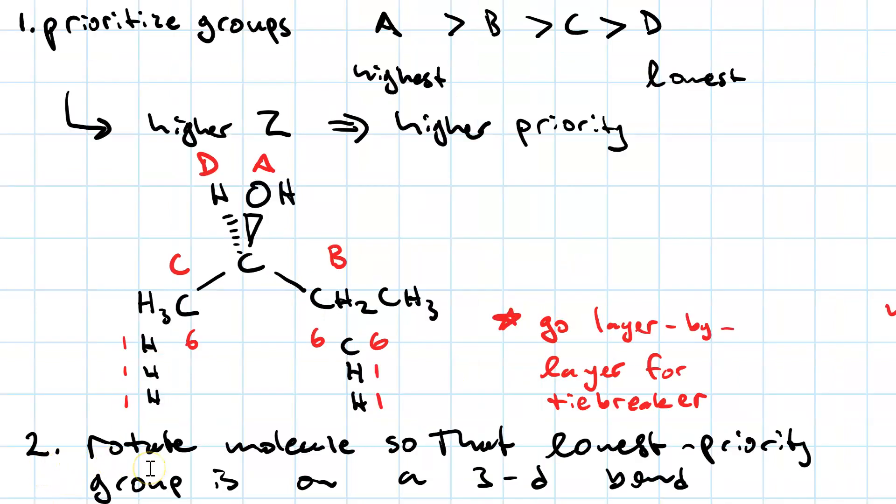Once you've prioritized your groups, you'll want to rotate the molecule so that the lowest priority group is on a 3D bond, either a wedge or a dash. Now, in the original molecule we're given, this hydrogen, the lowest priority group, is on a dash, so it's already done for us. But what do I mean by rotate? Let me show you.